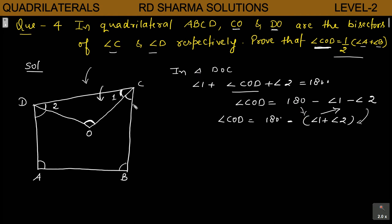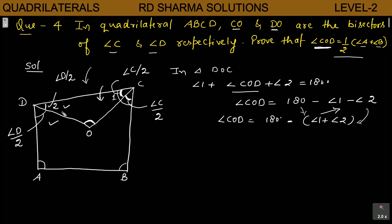देखिए, यह Angle 1 किसके बराबर होगा? इस Angle के बराबर होगा, तो यह total Angle आपका C है. इसलिए Angle 1 को मैं लिख सकता हूँ Half of Angle C. In the same manner, Angle 2 को आप लिख सकते हैं Half of Angle D. Because these two angles are equal and these two are equal — Angle 1 is half of Angle C and Angle 2 is half of Angle D. So here is the modification: Angle COD is equal to 180 minus half of (Angle C plus Angle D). Taking half common: Angle COD = 180 minus half of (Angle C plus Angle D). This is Equation 1.